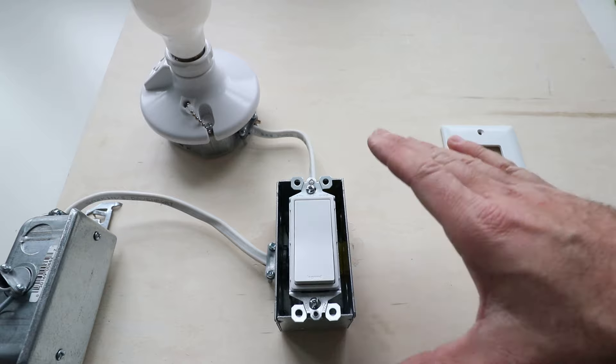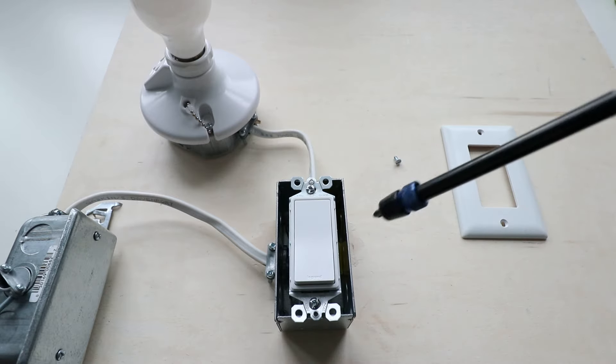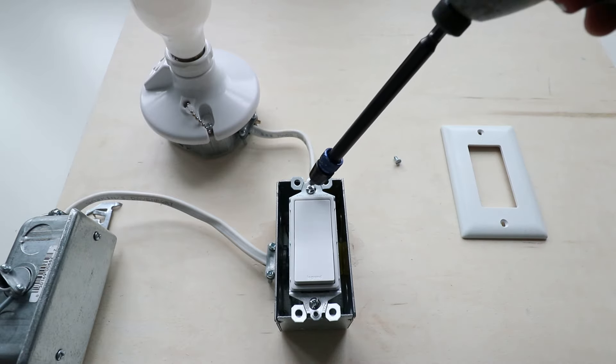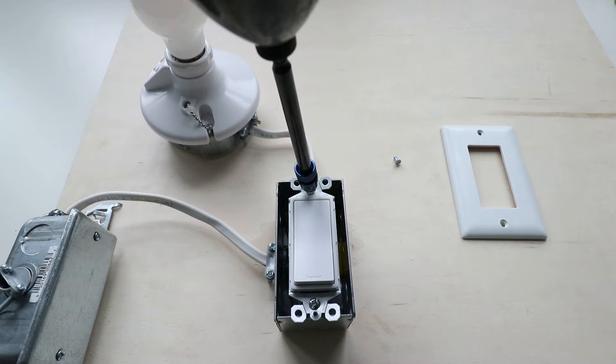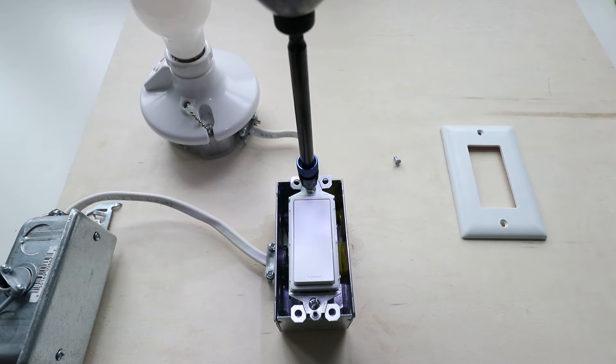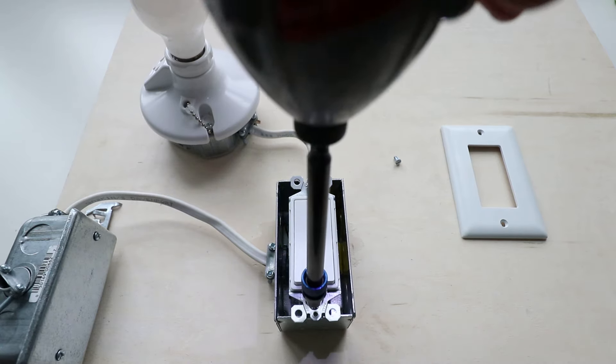Now this will work to identify a neutral wire for either these light switches, which are called a Decora-style light switch, or the traditional toggle switches or lever switches that most of you are used to.